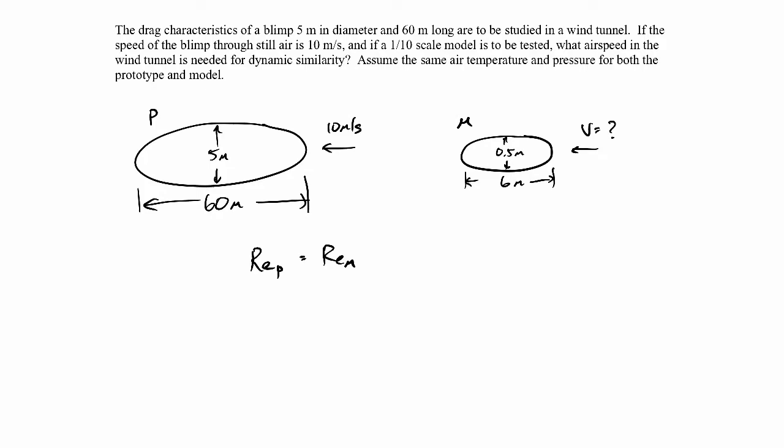So the Reynolds number is just the velocity times the length scale, which would be, let's say, the diameter, divided by the kinematic viscosity of the air. And we want that for the prototype to be the same thing for the model.